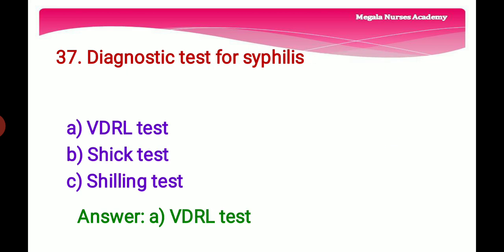Thirty-seventh question: Diagnostic test for syphilis — Option A: VDRL test, the Venereal Disease Research Laboratory test to identify syphilis. Option B: Schick test, used to identify diphtheria. Option C: Schilling test, to identify B12 deficiency. The right answer is Option A, VDRL test.